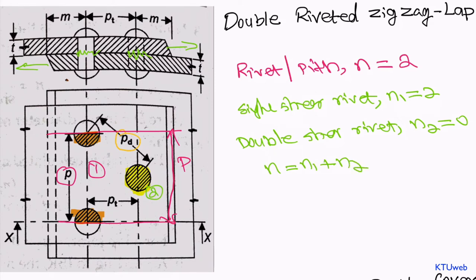The reason we calculate the number of rivets per pitch is that it is the fundamental unit of the rivet arrangement. Once you get the strength of that fundamental unit, you can easily find the overall capacity of the riveted joint. That is what we are practicing here.